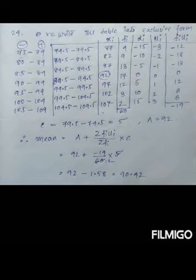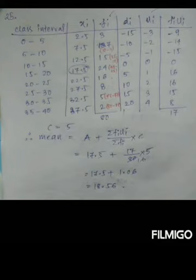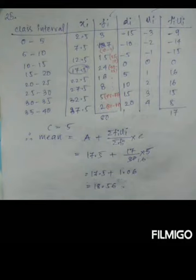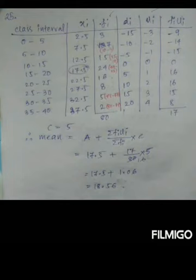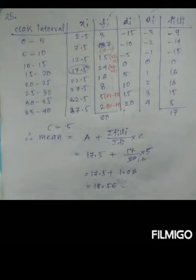In Question 25, the data is given in 'less than' form — for example, 'less than 5', 'less than 10', jumping by 5. Convert each into a class interval: 'less than 5' becomes 0 to 5, 'less than 10' becomes 5 to 10, continuing up to 35 to 40. Then find the class mark xi for each interval.